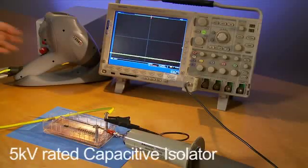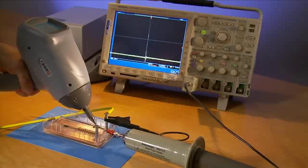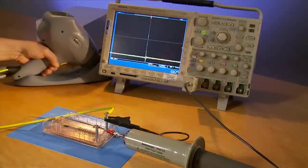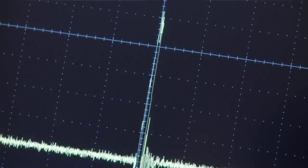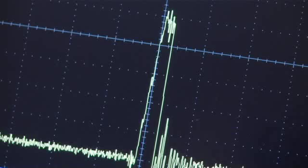Finally, let's look at a 5 kV capacitive isolator that uses silicon dioxide insulation. As you can see from the sharp drop in the output voltage, the surge broke through the silicon dioxide and dumped the charge from the tester.